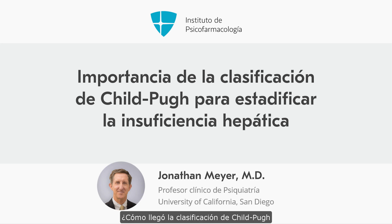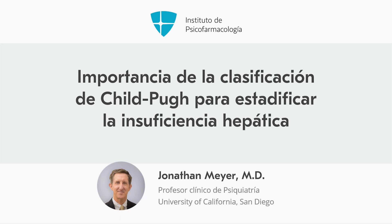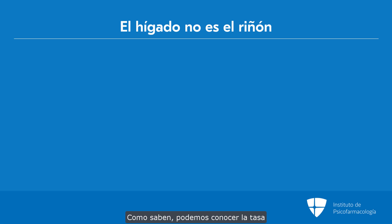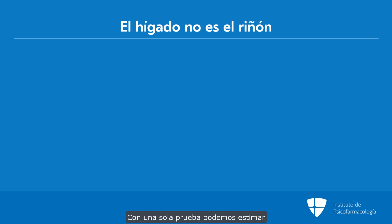How do we end up with Child-Pugh as being the best correlate of the stage of cirrhosis? We have more difficulty in trying to figure out what the liver is doing for a particular drug in a way that's not true for the kidney. I can get an estimated GFR from simple labs and pretty much figure out what the person's renal function is. But the liver is not the kidney.